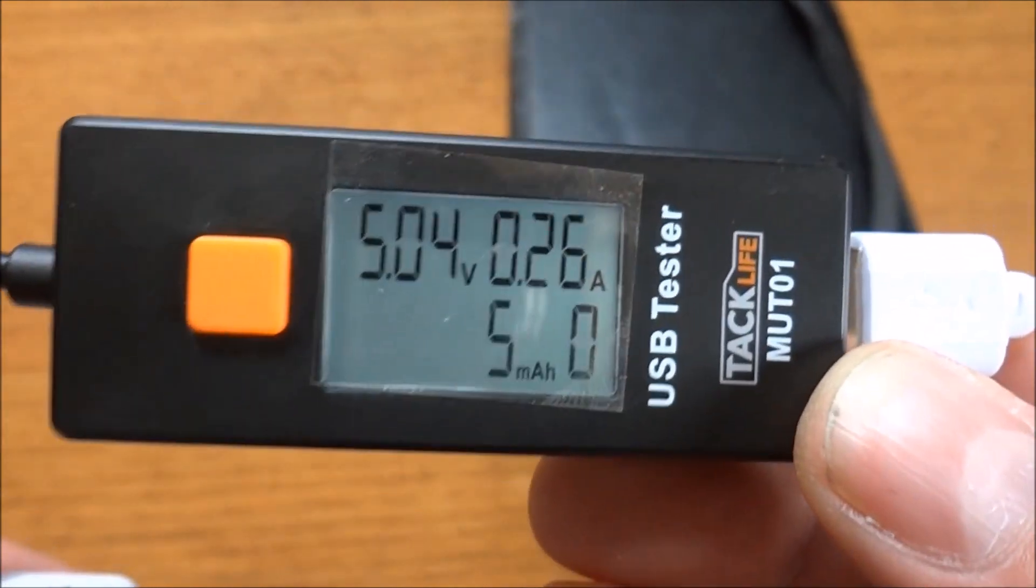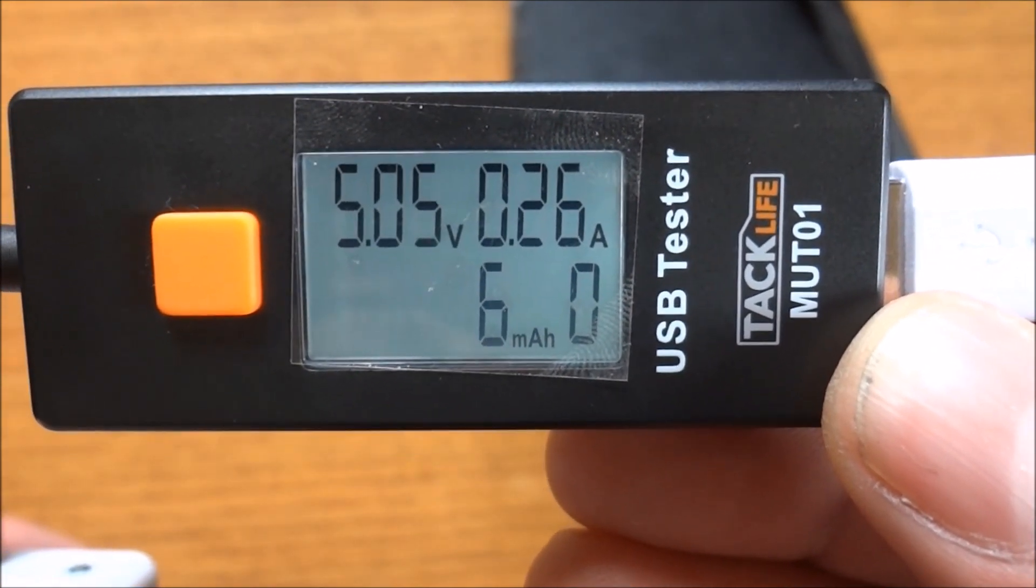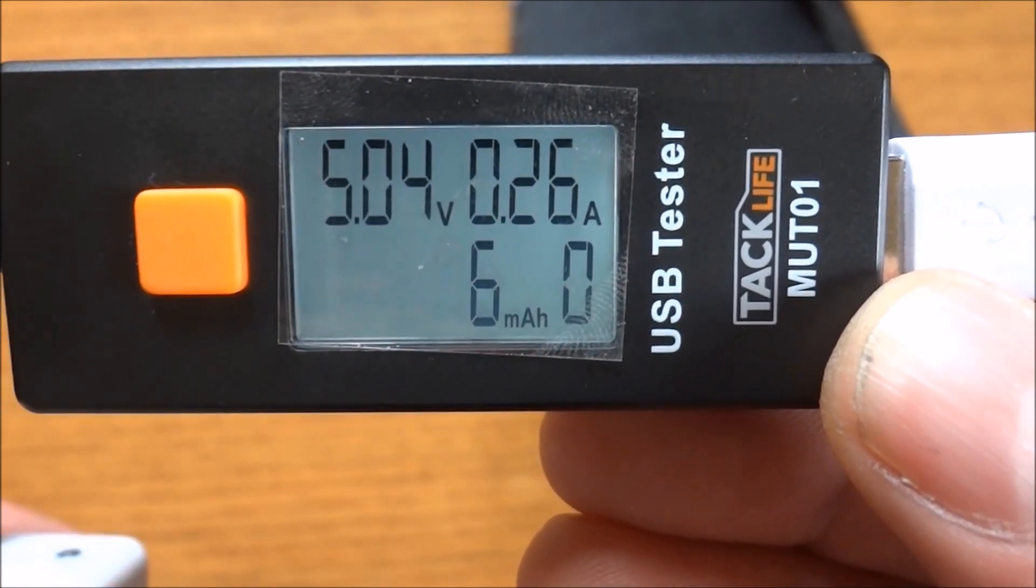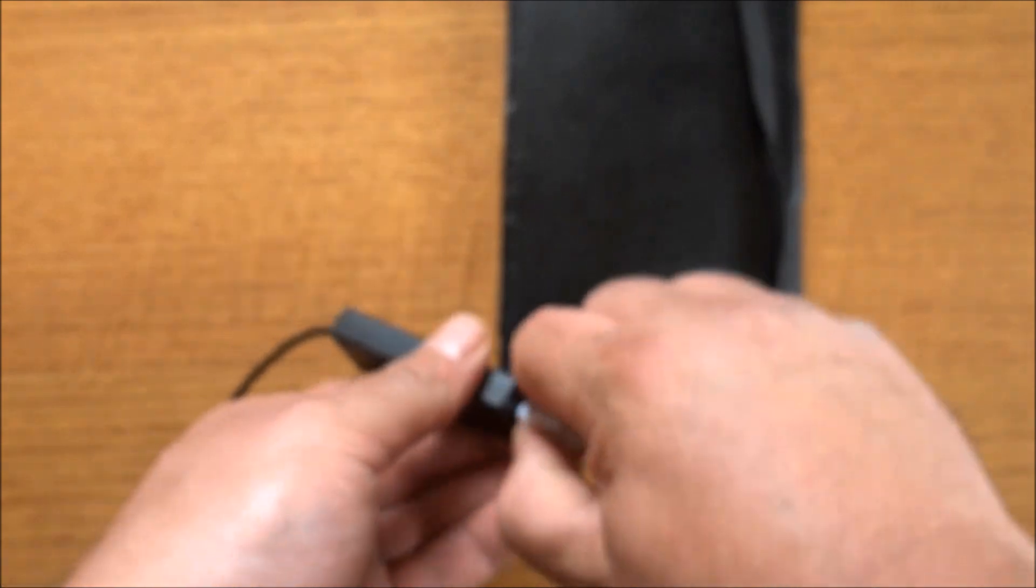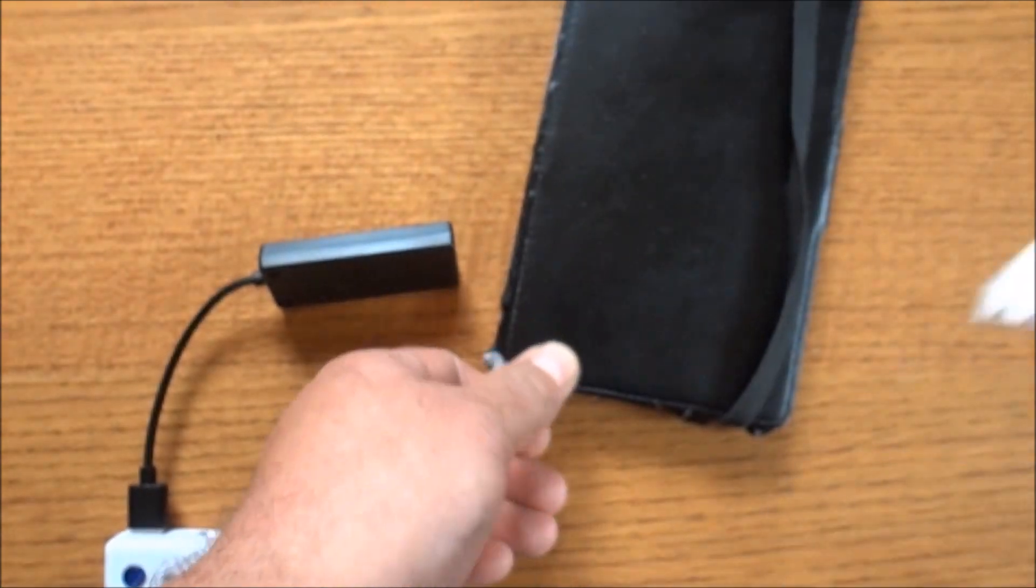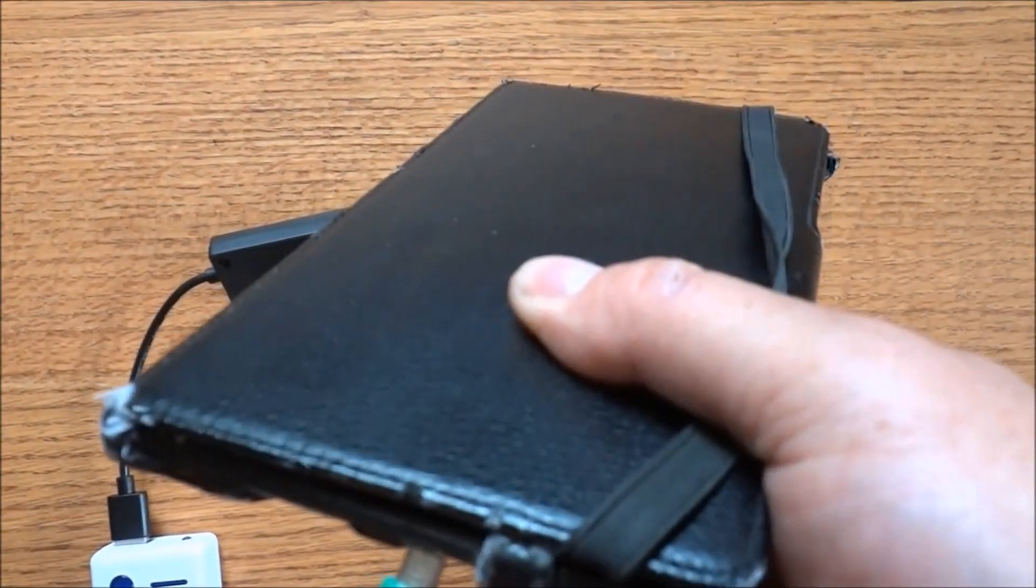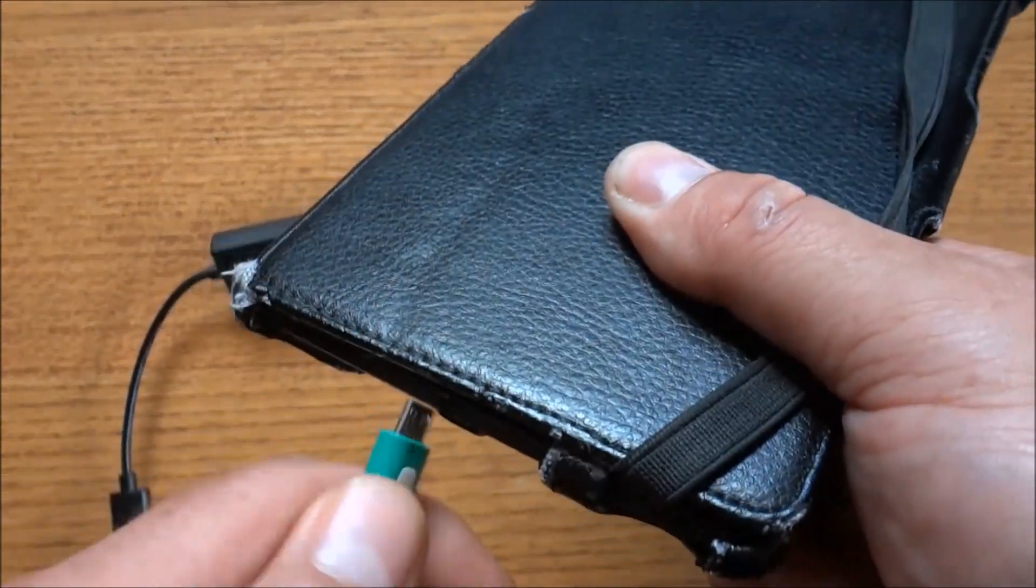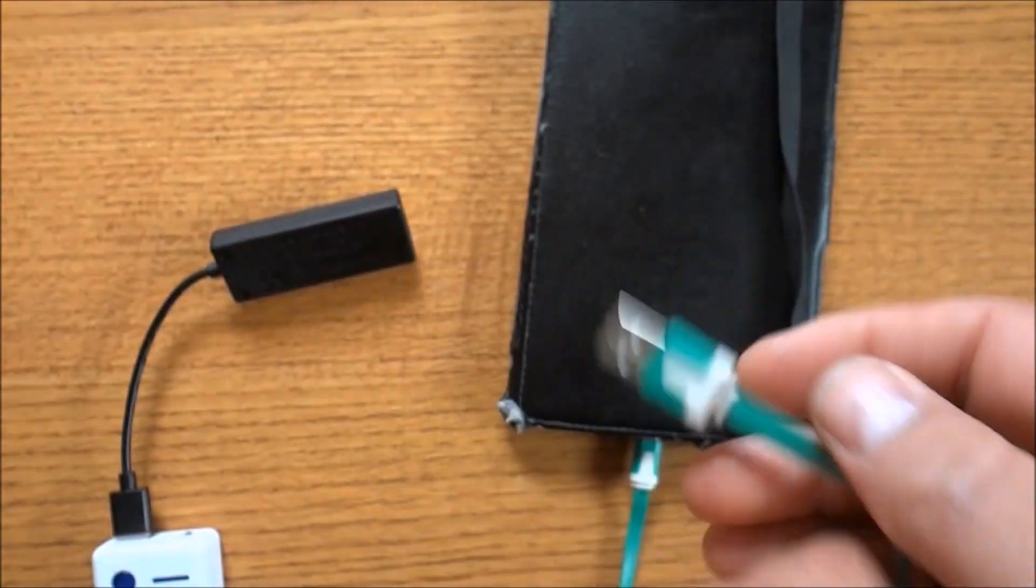Alright, I got my power bank on. With this small cable, this is what the Nexus 7 is pulling: 5.04 volts at 0.026 amps. So now let's change out the cable again to this nice flat cable.